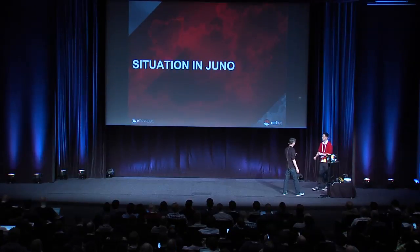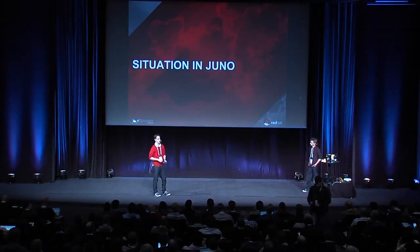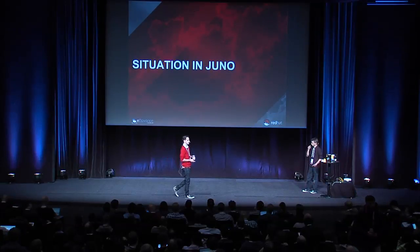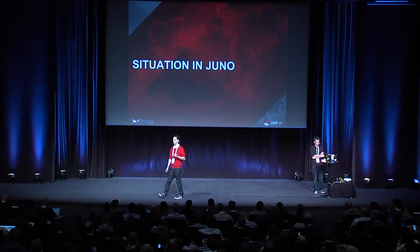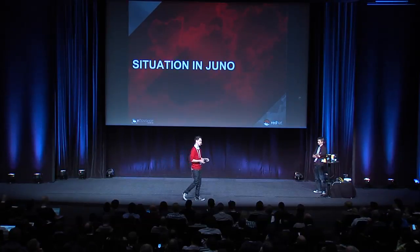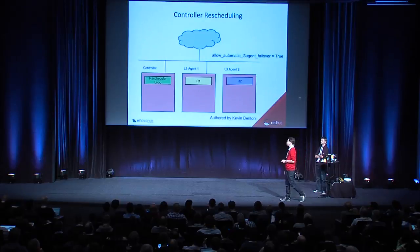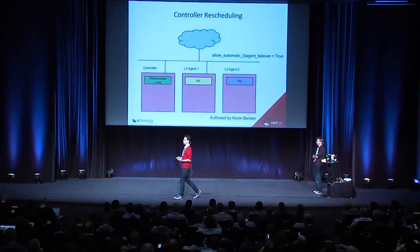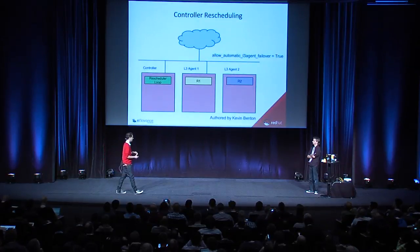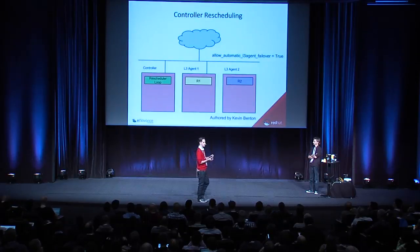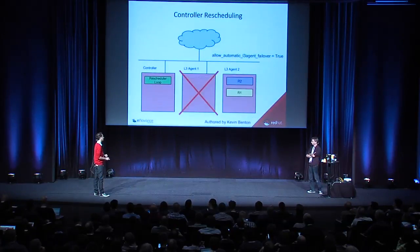Let us introduce the Juno work. There is also, just before we talk about Juno, a similar solution I saw on blogs: a Python script that uses the SDK to detect when an agent goes down, takes all the routers on that agent, reschedules them, and runs in a crontab. What Kevin did in Juno is basically bake something like that into Neutron itself — into the Neutron controller. There's code that runs in a loop, gets all the agents, detects if one is dead based on RPC heartbeat, and moves all routers from that agent over.